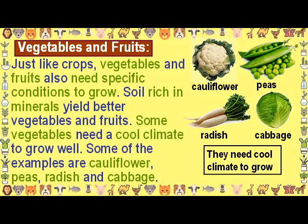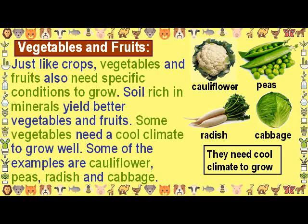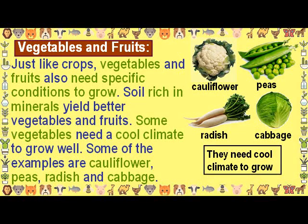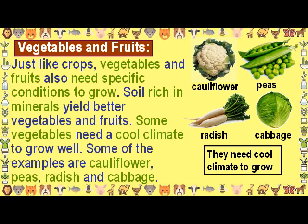Vegetables and Fruits. Just like crops, vegetables and fruits also need specific conditions to grow. Soil rich in minerals yields better vegetables and fruits. Some vegetables need a cool climate to grow well. Examples include cauliflower, peas, radish and cabbage.